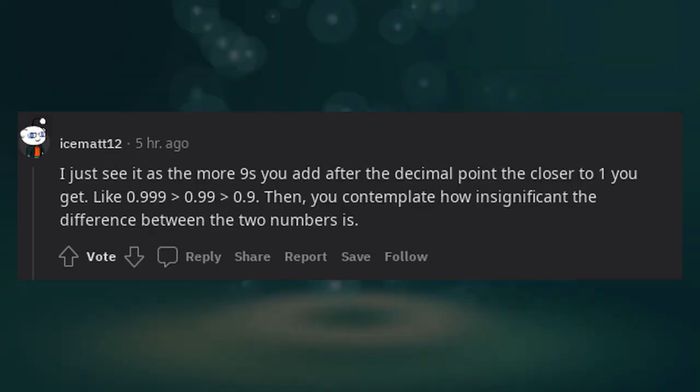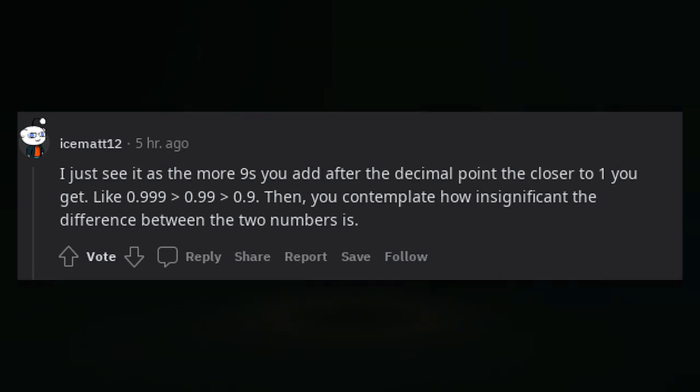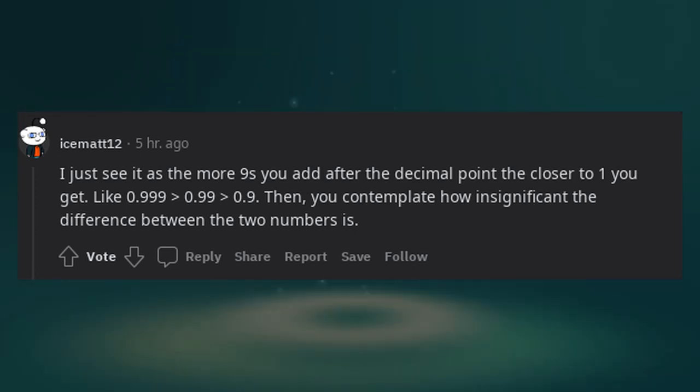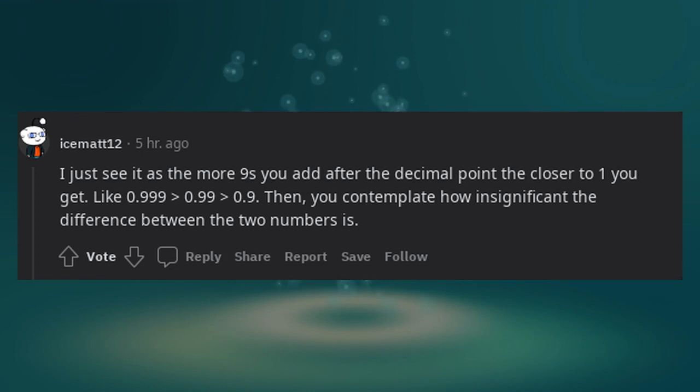I just see it as the more 9's you add after the decimal point, the closer to 1 you get. Like 0.9, 0.99, 0.999. Then you contemplate how insignificant the difference between the two numbers is.